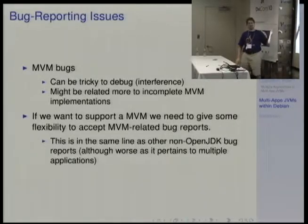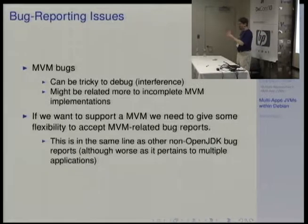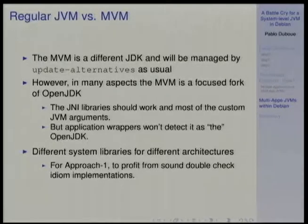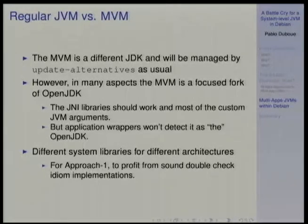In many cases the interaction may just be showing a bug in the code, or it could be a bug in the MVM implementation. This is similar to the issue of having multiple JVMs within Debian. As a manpower issue, we're moving away from multiple JVMs and focusing on OpenJDK. I still don't quite understand how we'd handle the JNI libraries. If we only support OpenJDK, then you put JNI libraries there. The MVM as a fork of OpenJDK should take the same native libraries as the regular JDK, though I don't know if the location would be different.